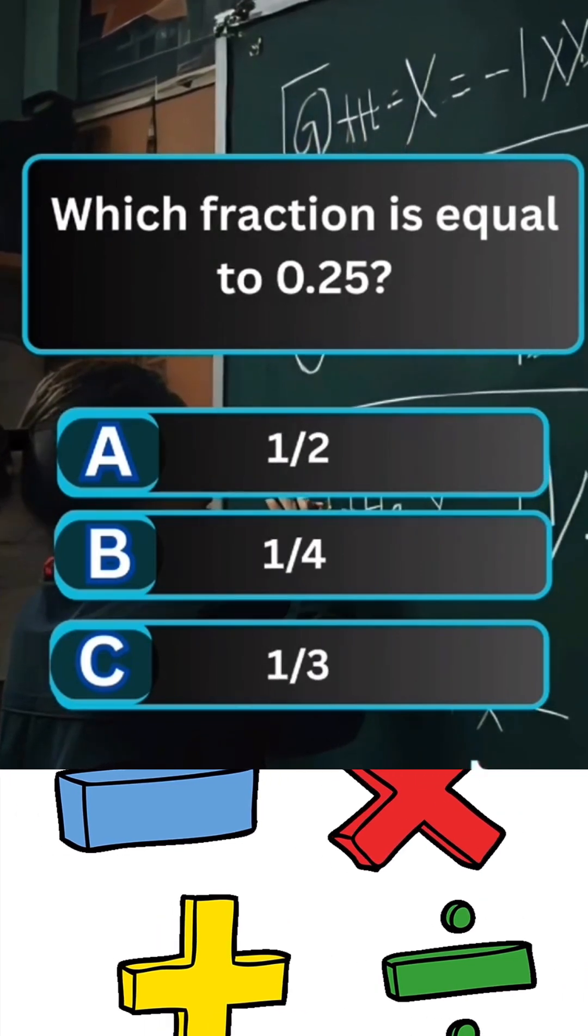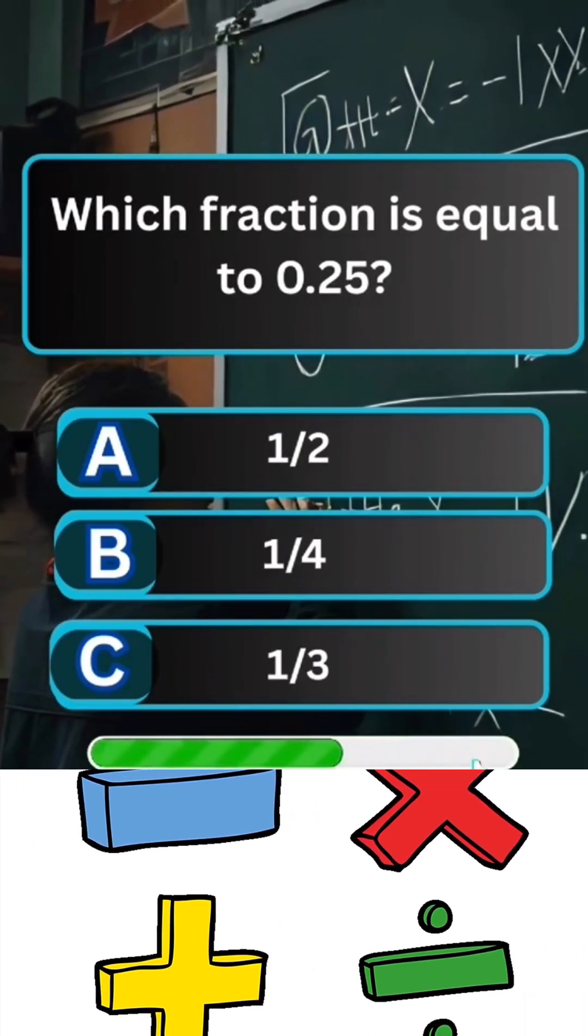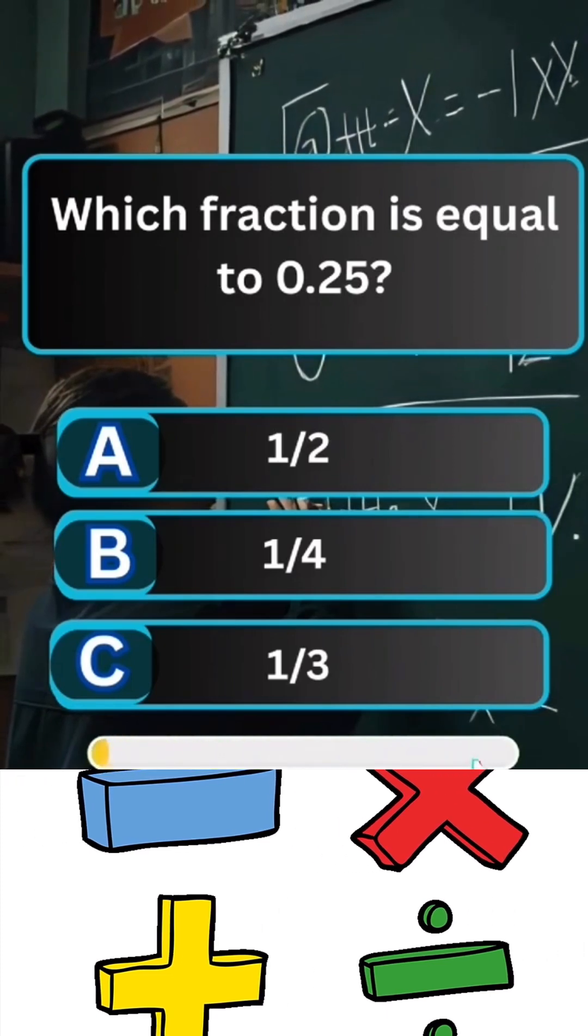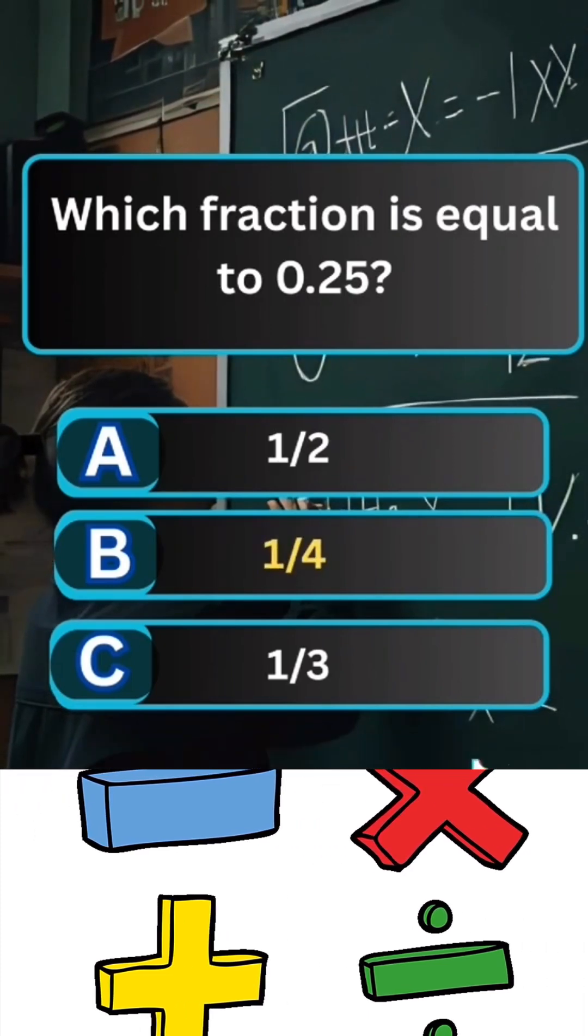Which fraction is equal to 0.25? Answer B. One quarter.